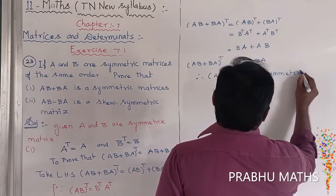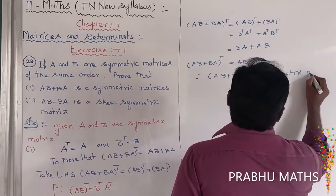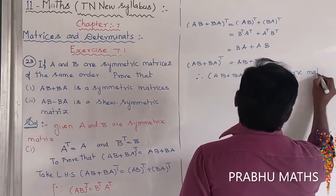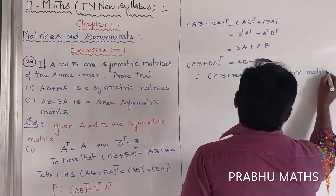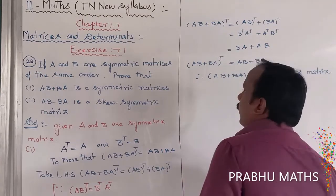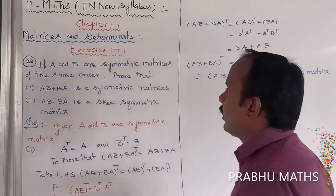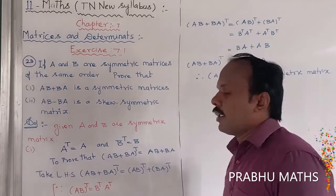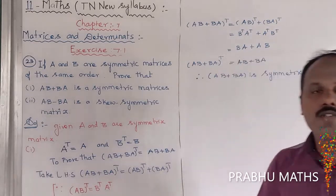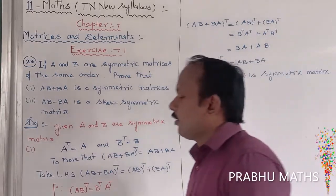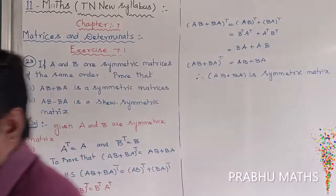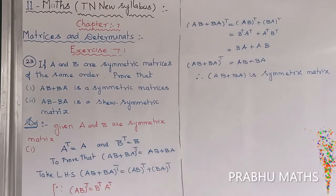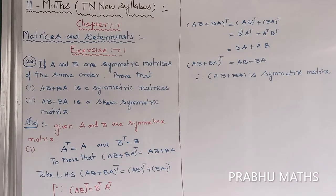Therefore AB plus BA is a symmetric matrix. The first subdivision is now completed. Next, we move on to the second subdivision.